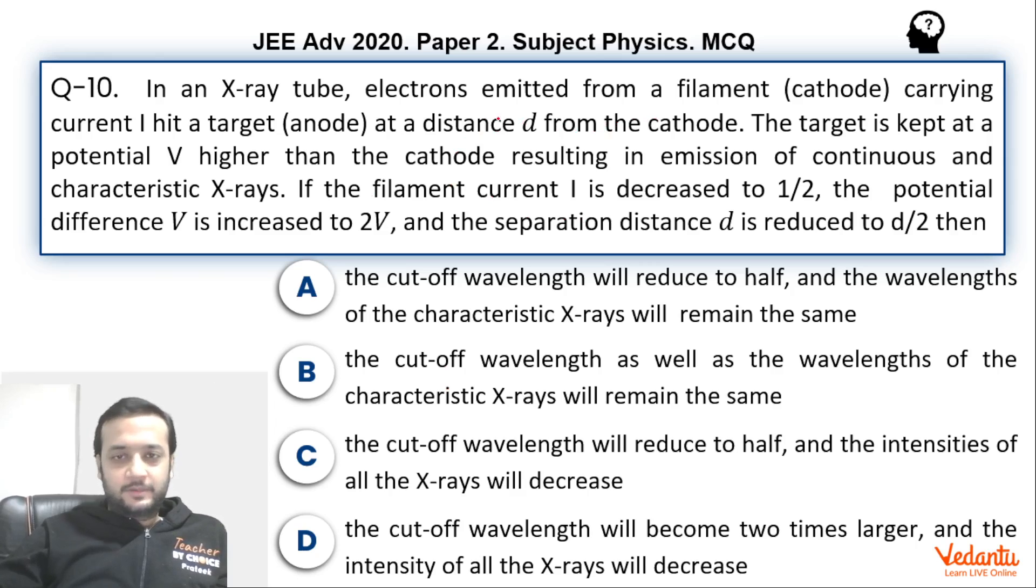In the Coolidge tube experiment, there is a cathode and there is an anode. The distance between cathode and anode is d. The potential of anode is V higher than that of cathode.